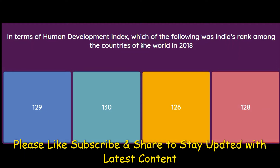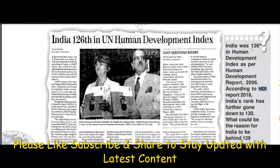In terms of the Human Development Index, which of the following was India's rank amongst the countries of the world in 2018? Options are 129, 130, 126, or 128. The answer is 130. India was ranked 126th in the Human Development Index as per the Human Development Report in 2006. According to the HDI report in 2018, India's rank has further gone down to 130. So in 2006 our rank was better, and in 2018 it fell to 130.